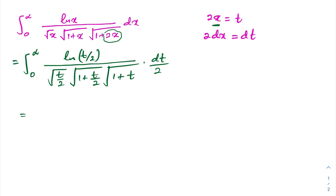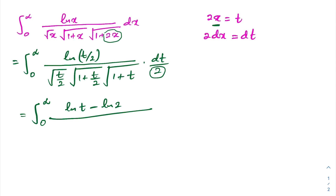We can simplify. Using the property of natural log, the numerator becomes natural log of t minus natural log of 2. In the denominator, we have factors of 1 over square root of 2, which multiply together to give 1/2, and this 2 cancels with the dt/2. We are left with the integral of (ln t − ln 2) over square root of t times square root of (t+2) times square root of (t+1), dt.